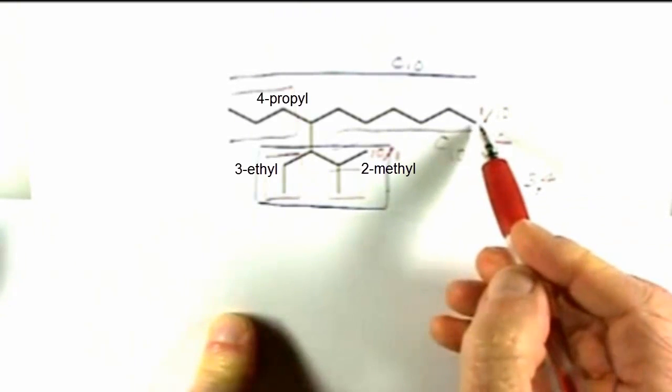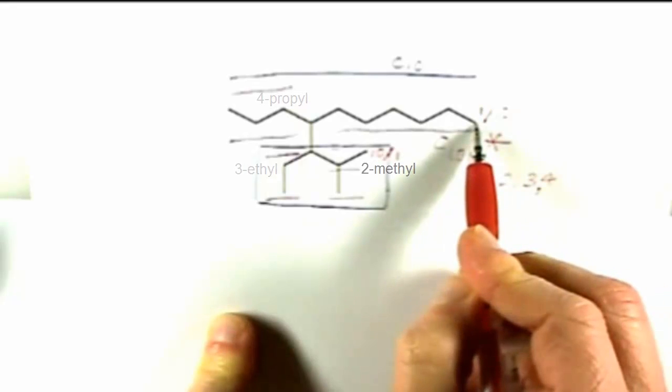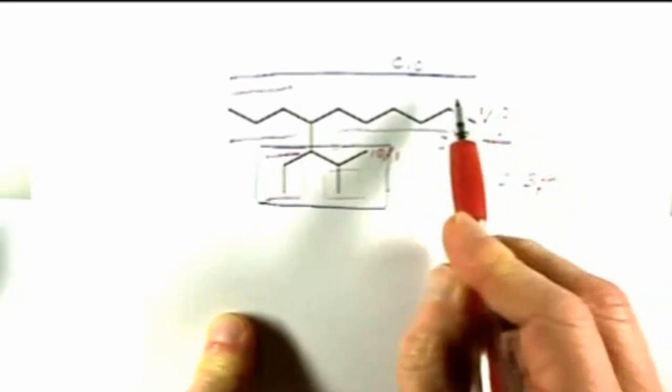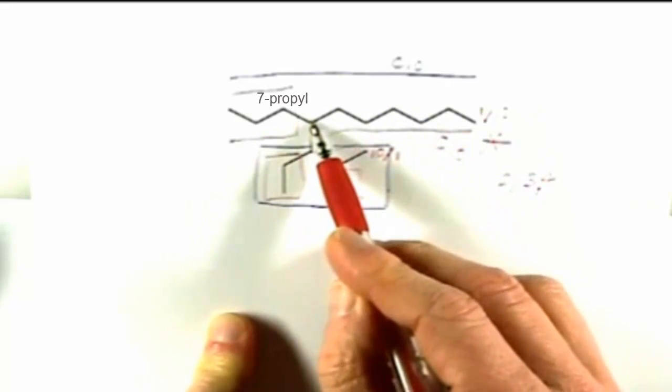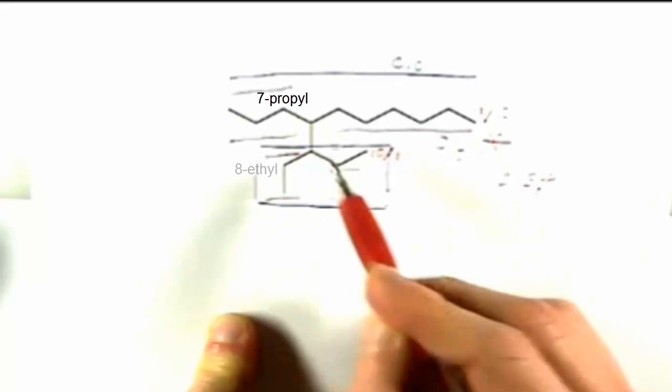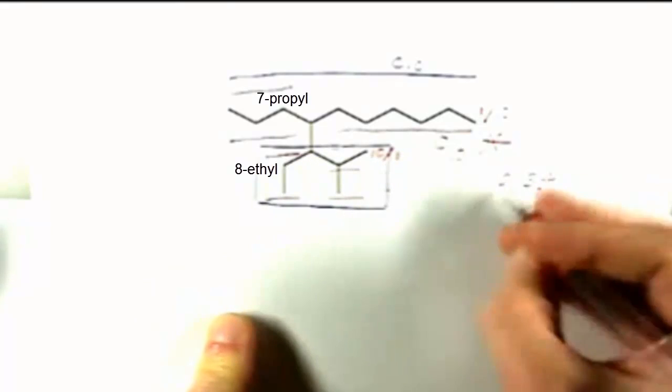And if we go the other way, call the upper right atom 1. That's going to be 1, 2, 3, 4, 5, 6. We're going to have the propyl at 7, the ethyl at 8, and the methyl at 9.